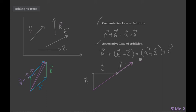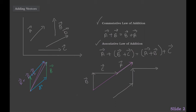Now we check if vector A plus vector B plus vector C equals the same resultant. We draw vector A, then add vector B, then add vector C. This resulting line, if drawn accurately to scale, would be parallel, with the same magnitude and same direction as the previous resultant. So both the associative law and the commutative law work in vector addition.